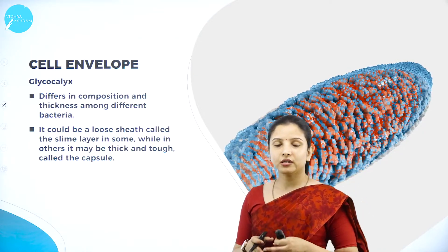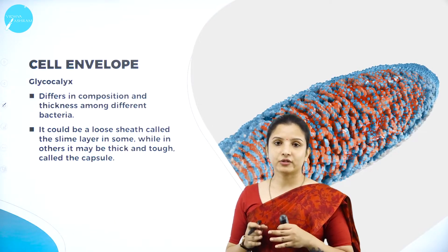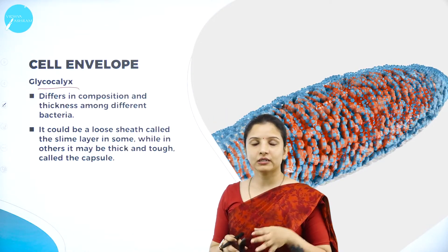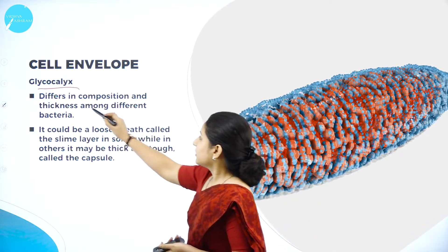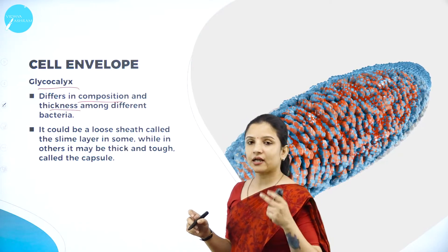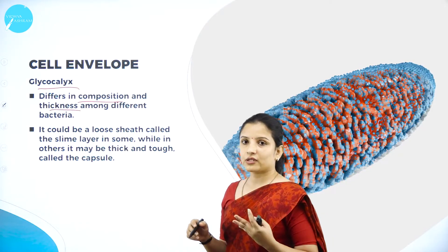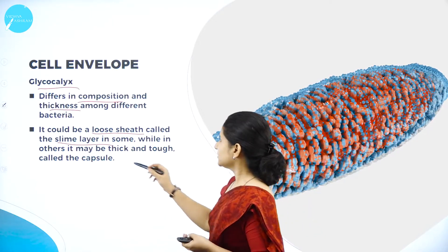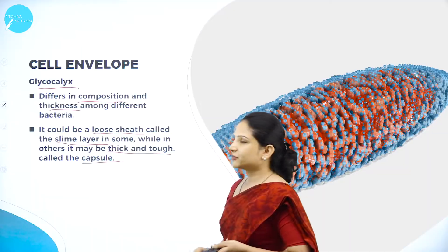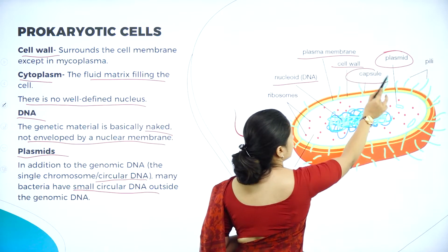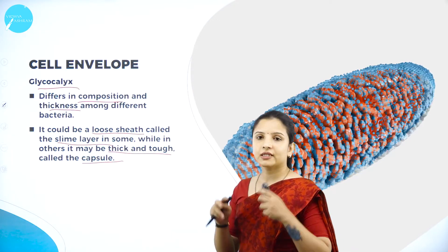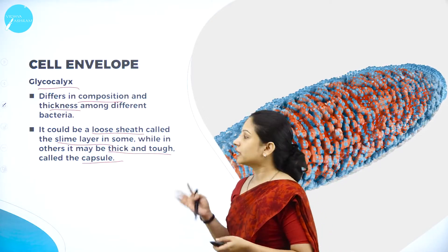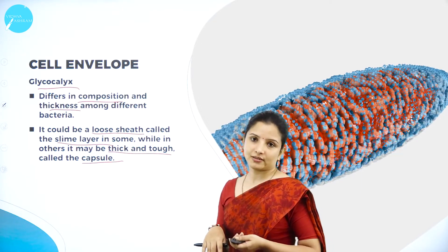The glycocalyx can vary in thickness and composition among different bacteria. If the glycocalyx is loosely arranged, it is called the slime layer. If it is thick and tough, it is called the capsule. So glycocalyx is of two types: slime layer and capsule.